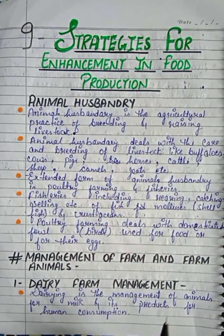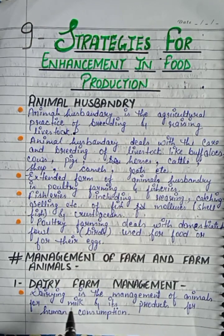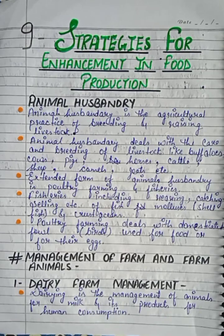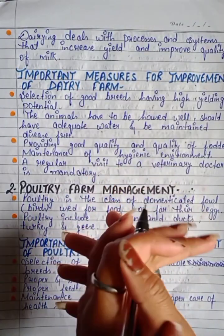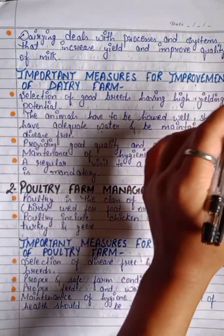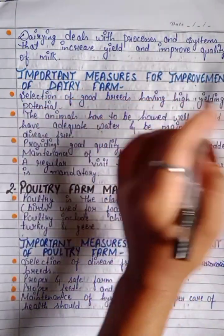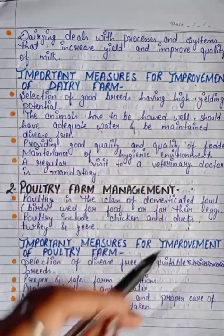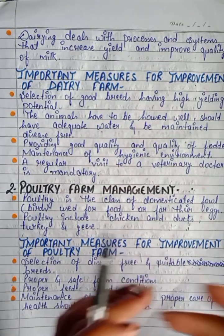First is dairy farm management. Dairy is the management of animals for milk and its products for human consumption. We keep animals that give milk, which humans then use. Dairy deals with processes and systems that increase yield and improve the quality of milk.